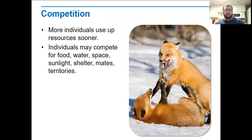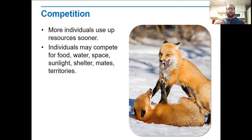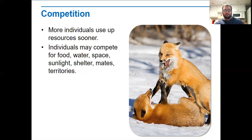The first density-dependent factor is competition. If we have a really large number of foxes living in the same population, competition is going to be really high because they're all competing for the same food, water, space, sunlight, shelter, mates, and territory. If the number of foxes is lower, competition may not be as high — there are fewer organisms competing for resources. Think about 100 foxes competing for food, water, and space versus 50 foxes — the competition won't be as high with 50 versus 100.